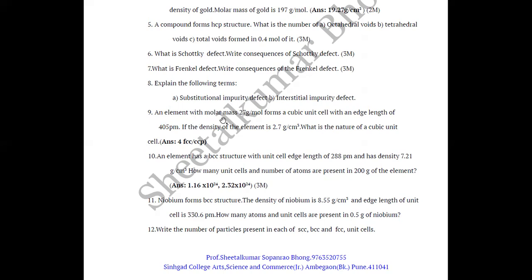A numerical: an element with molar mass 27 grams per mole forms a cubic unit cell with an edge length of 405 picometers. If the density of the element is 2.7 grams per cm³, what is the nature of the cubic unit cell? The answer is 4, and the type of unit cell is FCC — face-centered cubic.